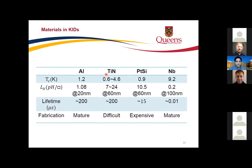Titanium nitride is a bit difficult because its properties depend on the nitrogen gas flow rate during deposition. Palladium silicide offers better uniformity than titanium nitride and aluminum, but it is more expensive — over $10,000 — compared to around $50–100 for the others.